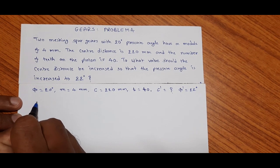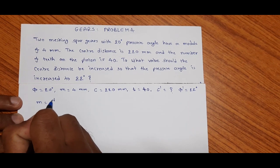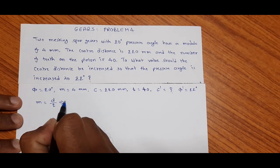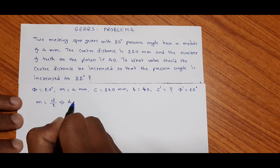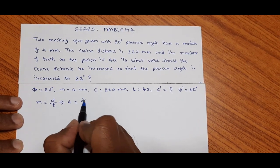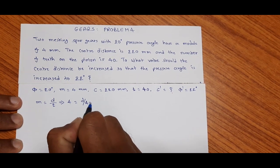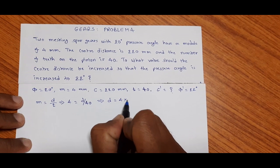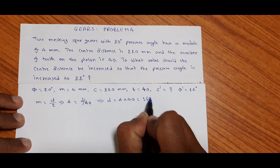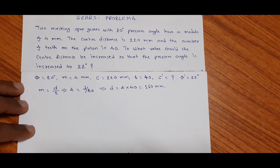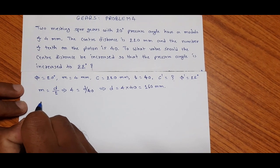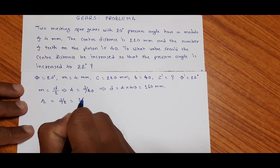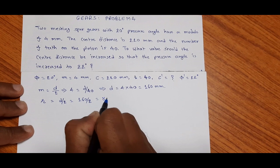From the given data, we can write: module m equals the pitch circle diameter of the pinion divided by the number of teeth of the pinion. So m = d/t, and hence 4 = d/40, giving us the pitch circle diameter of the pinion d = 4 × 40 = 160 millimeter. Therefore, the pitch circle radius of the pinion, small r, is equal to d/2 = 160/2 = 80 millimeter.